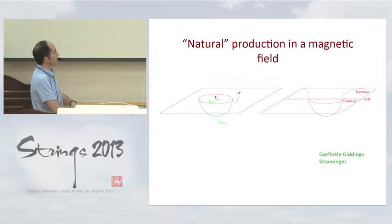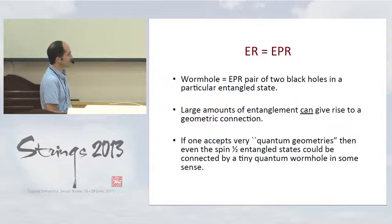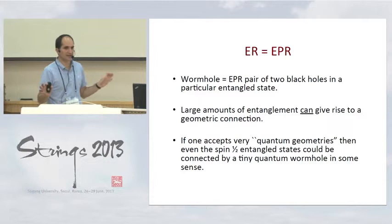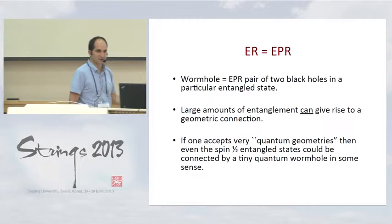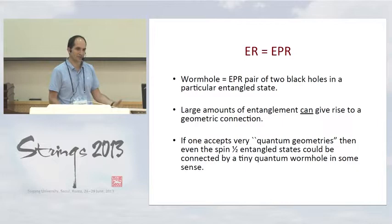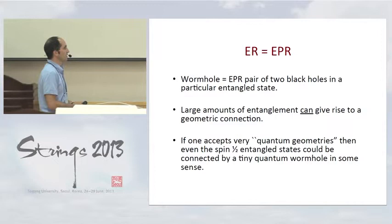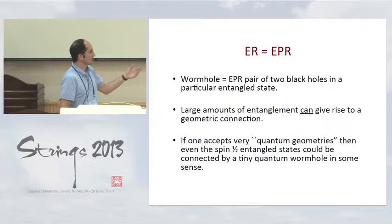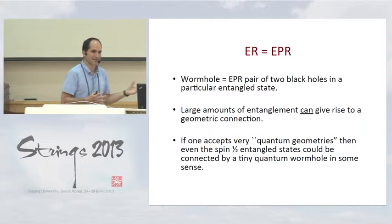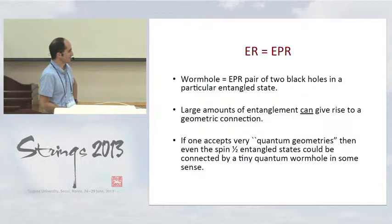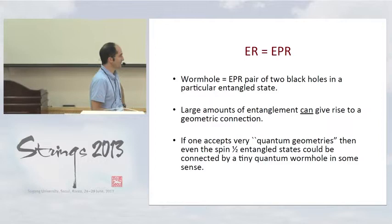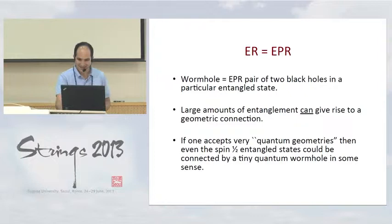The interpretation of these wormholes is that we have an EPR pair of two black holes in a particular entangled state. One thing we can see is that large amounts of entanglement can give rise to a geometric connection — the geometry of spacetime depends on the amount of entanglement. In some situations with black holes we can actually get a geometric connection. In some cases we might get an actual geometry described by Einstein's equations; in others, perhaps a very quantum geometry without an Einstein equation description. If you're willing to accept these very quantum geometries, even a spin-half particle might be connected by a very quantum bridge — though this is very speculative.